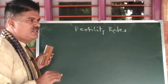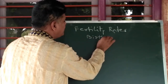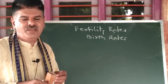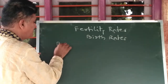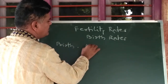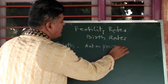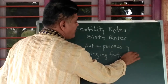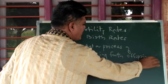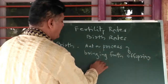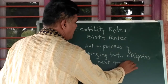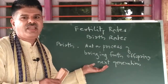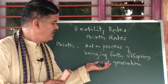Fertility rates are also known as birth rates. Now it is necessary to understand what is actually meant by birth. Birth is an act or process of bringing forth offspring. Offspring is nothing but the next generation. So birth is a process in which we are giving life to the next generation.